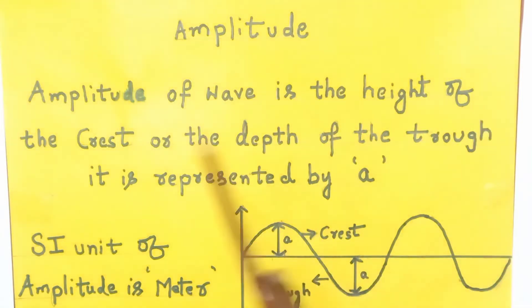Amplitude of a wave is the height of the crest or the depth of the trough. It is represented by A.